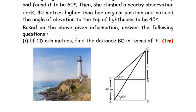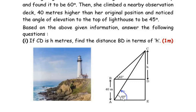We have a lighthouse and Amrita is standing near its base. In the equivalent figure, Amrita is standing at point A and AE represents the ground. Standing at point A, she looks at the top of the tower — C represents the top. When she looks up, her eyes make an angle of 60 degrees with the ground. Whenever you look straight, that represents the line of sight, and when you look upward from the line of sight, we call it the angle of elevation. So her angle of elevation is 60 degrees.